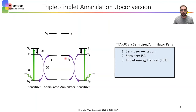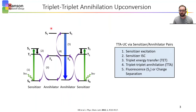Now, when two annihilators in the triplet excited state are in proximity, they can undergo triplet-triplet annihilation, resulting in one annihilator in the singlet excited state while the other returns to the ground state. The higher energy singlet excited state can either relax to the ground state emitting the upconverted photon, or charge separation at an interface can be done to extract the upconverted energy.